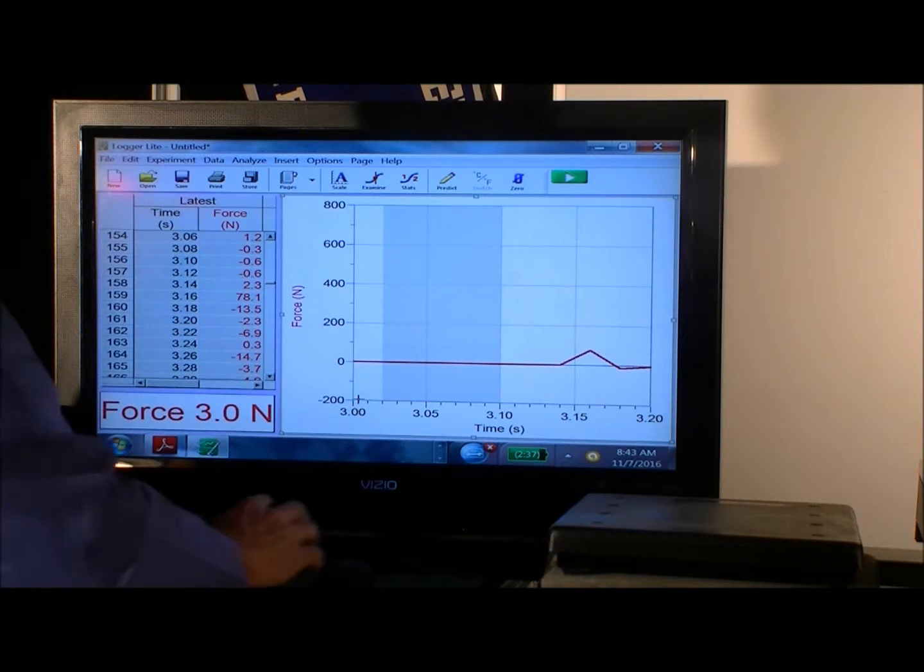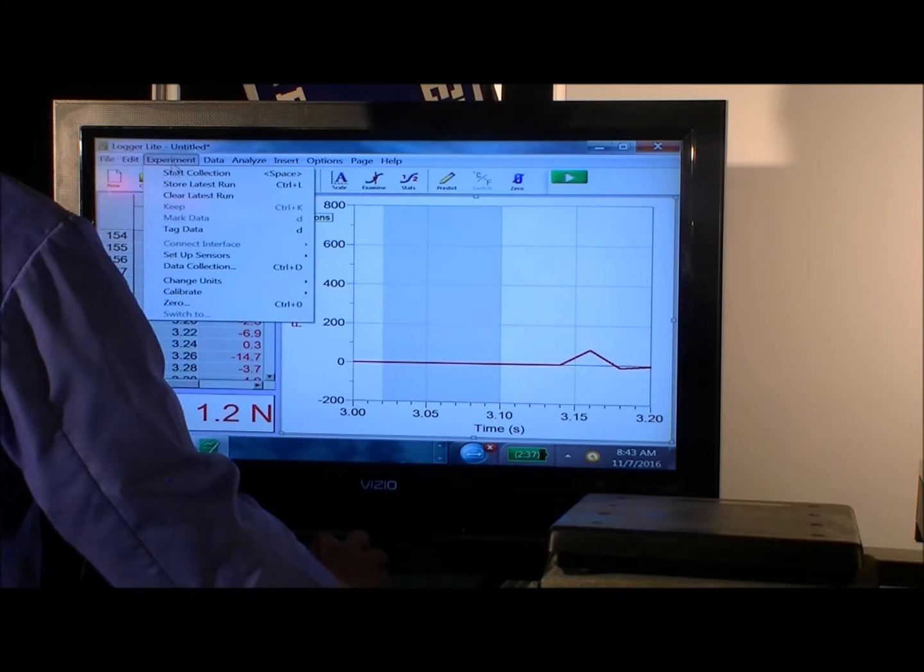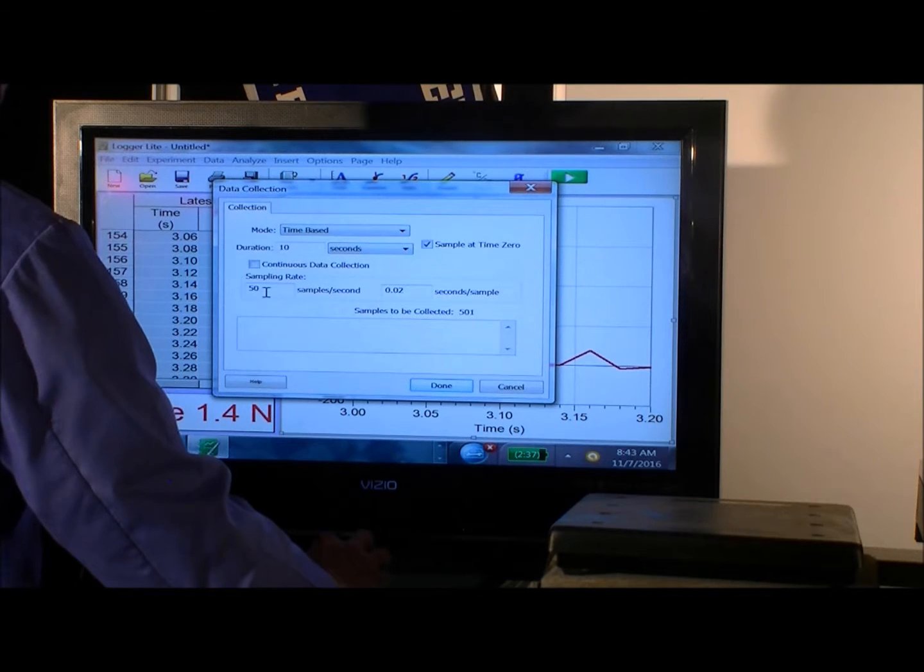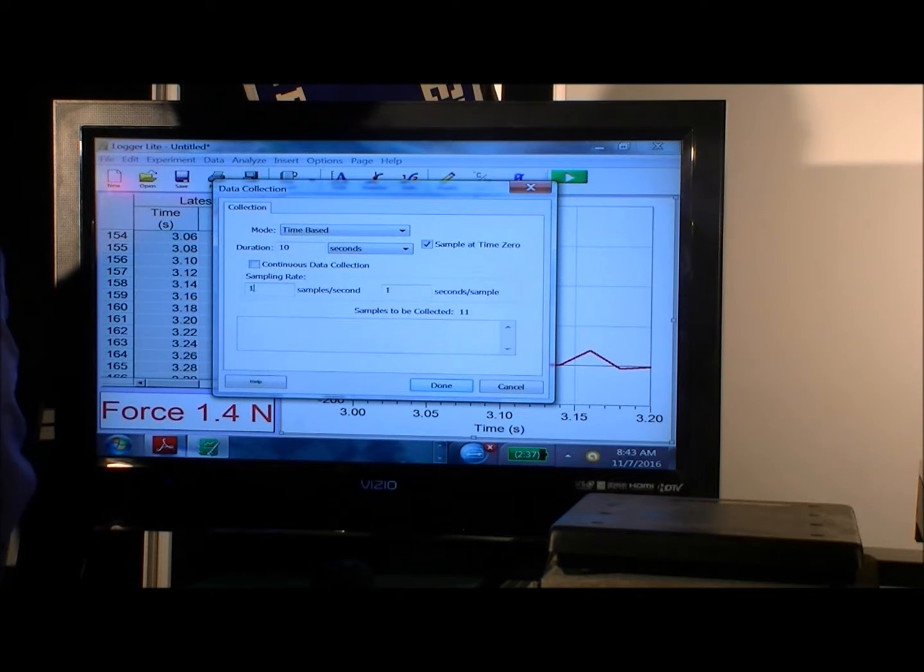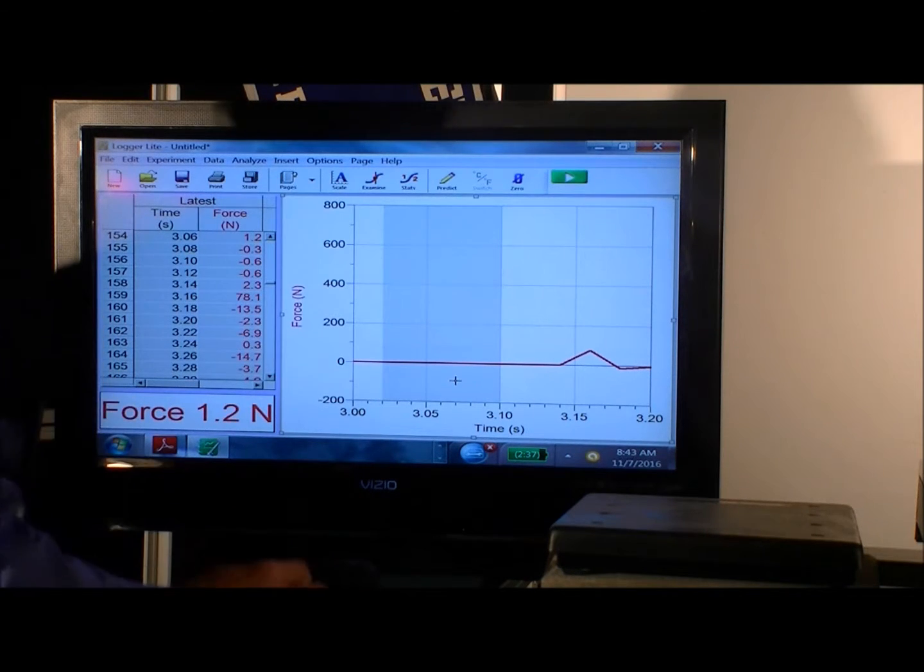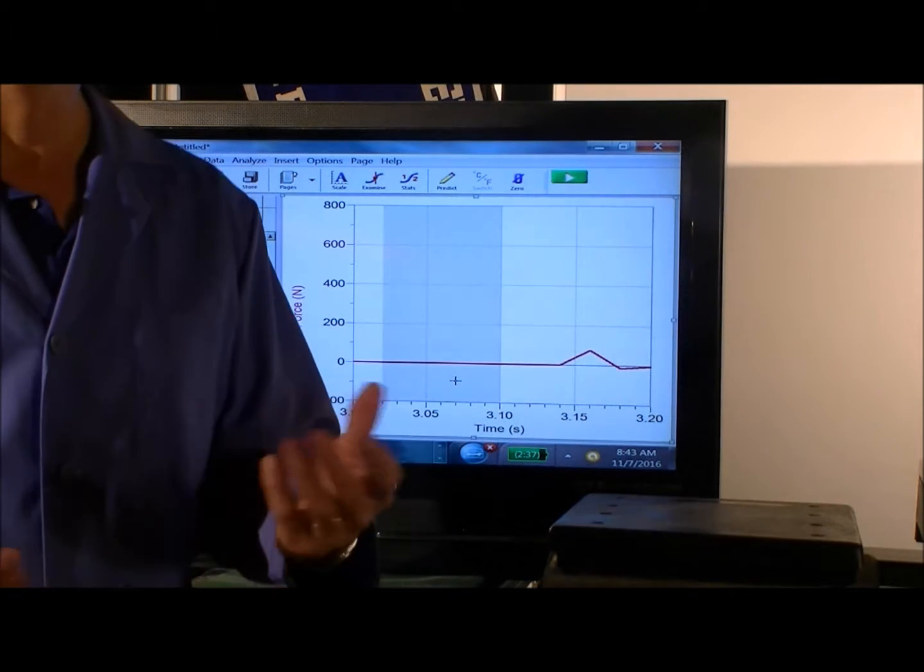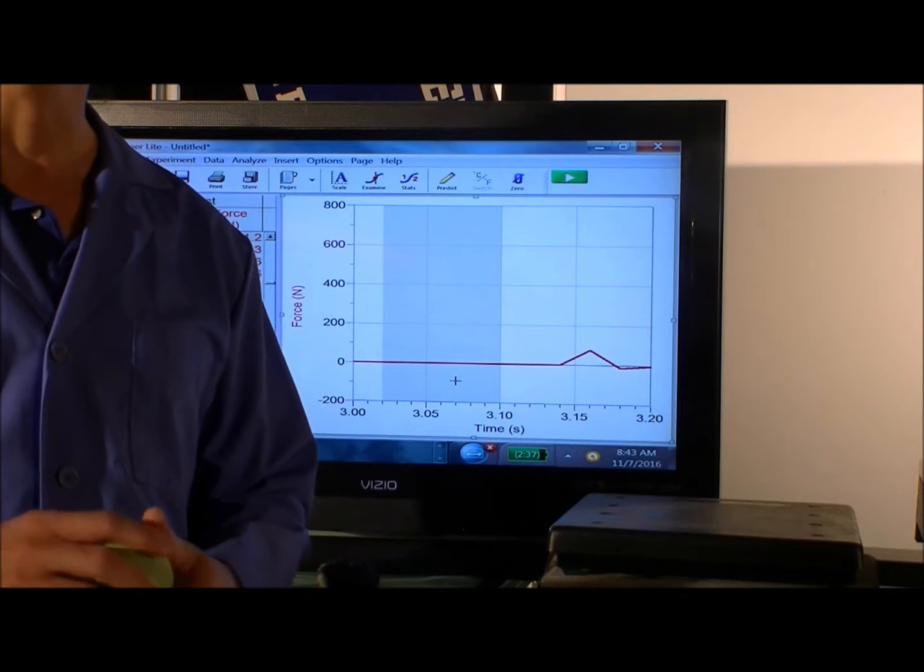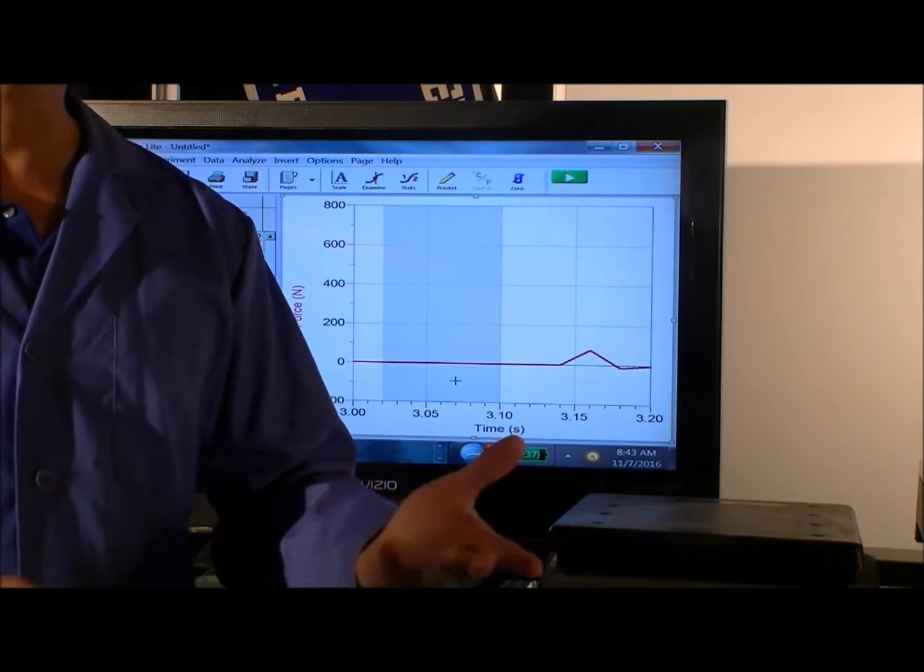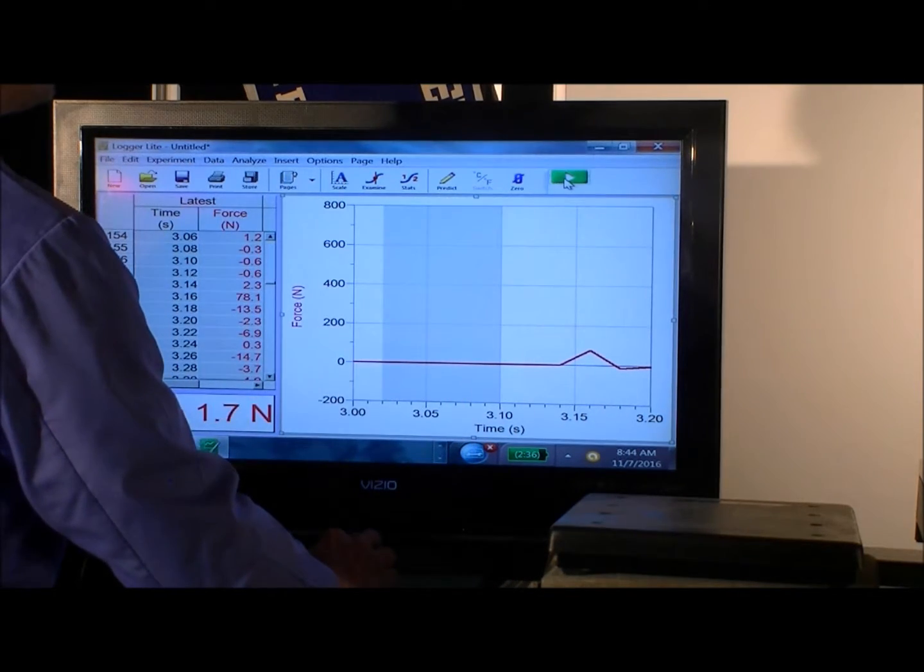So why not try increasing our sample rate to maybe a thousand times a second? So we go over here, we select data collection. So rather than sampling fifty times a second, we're going to increase our sample rate to a thousand times a second, with the thought that instead of maybe only getting two data points underneath the curve that corresponds to the bounce of the tennis ball, maybe we'll get 20 or maybe even 40 points under the curve so we can map things out accurately.